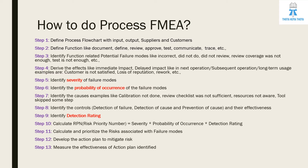Step five is to identify the severity of failure modes. Step six is to identify the probability of occurrence of the failure modes. Step seven is to identify the causes — for example, calibration not done, review checklist was insufficient or not present, resources not aware of a process step, or a tool that was not capable of performing a particular task and skipped an important step. Step eight is to identify the controls: detection of failure, detection of cause, and prevention of cause, and their effectiveness.